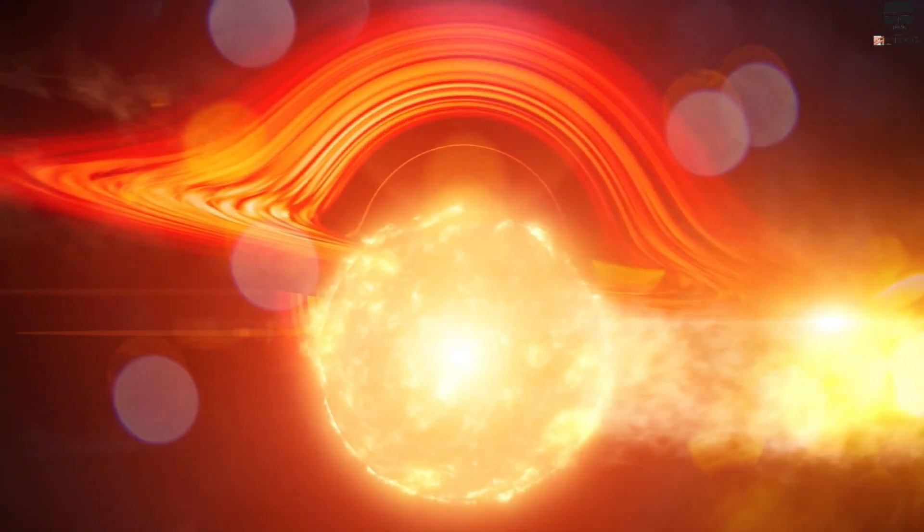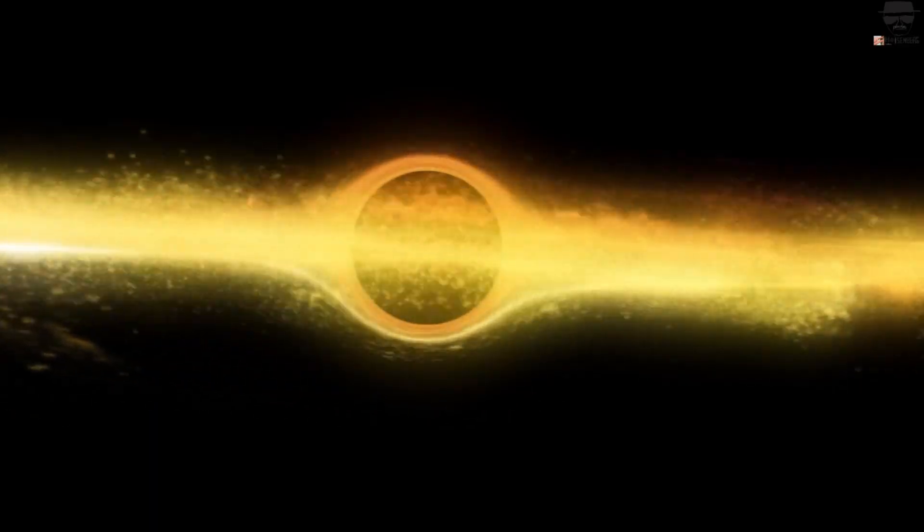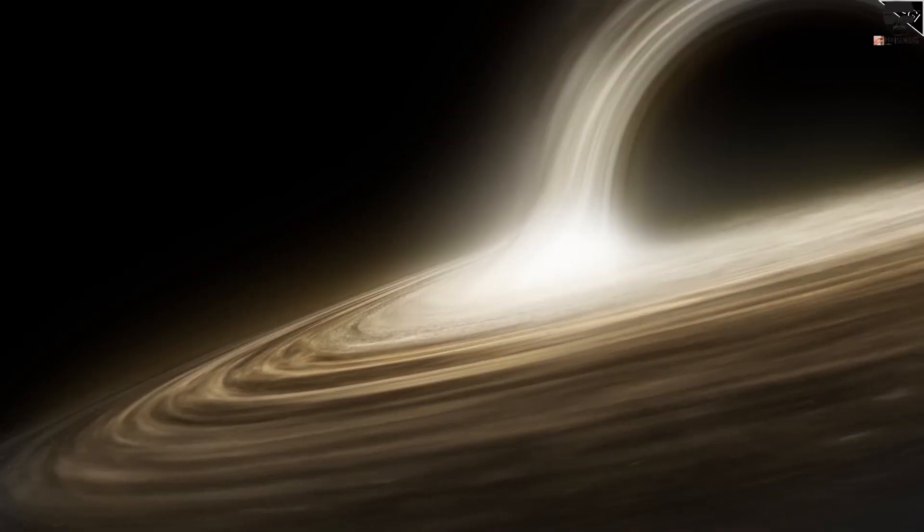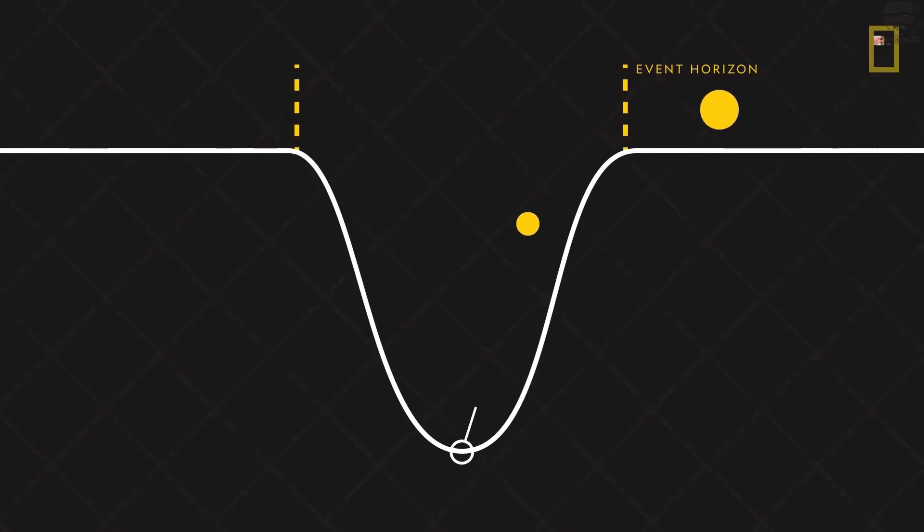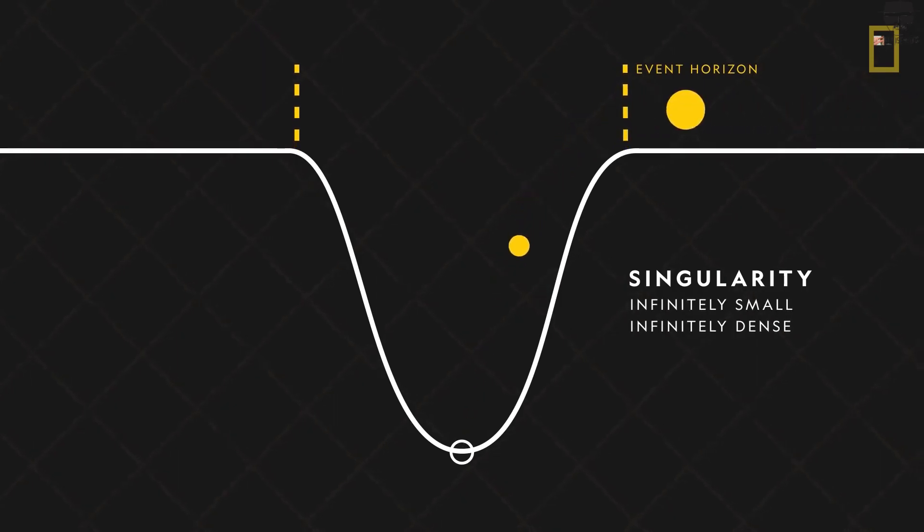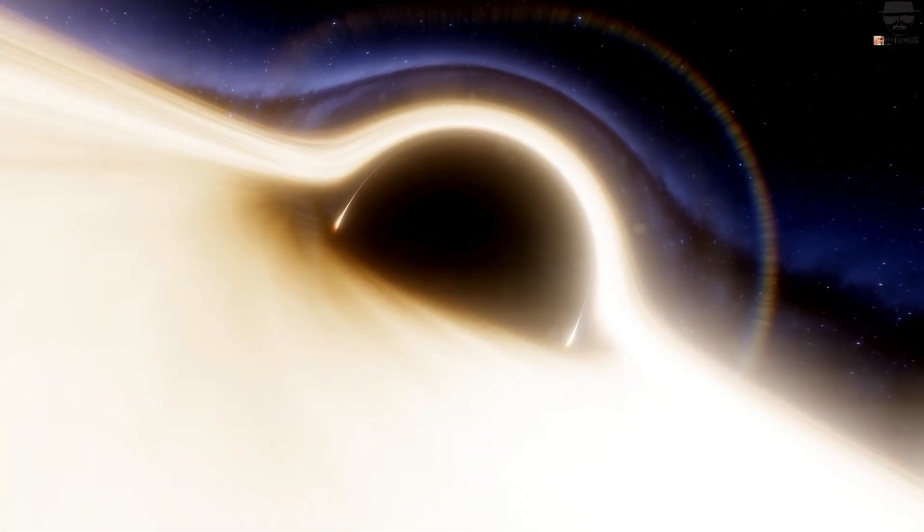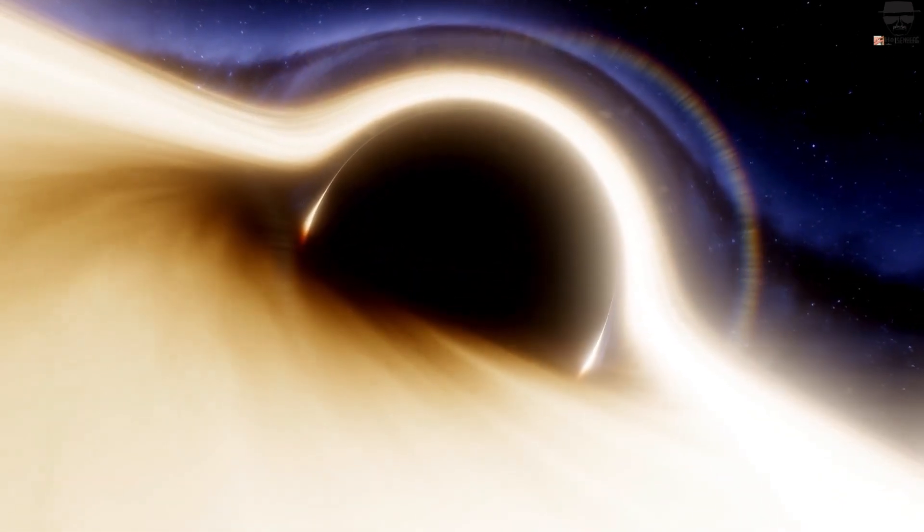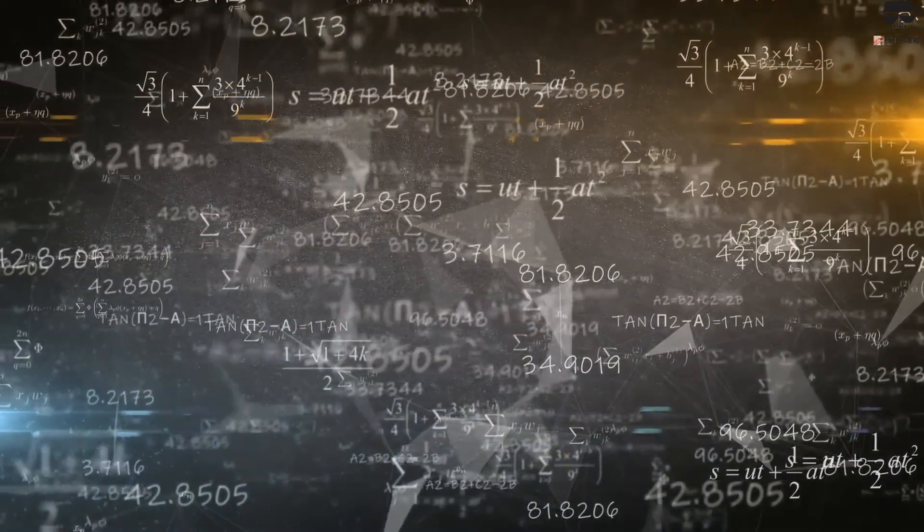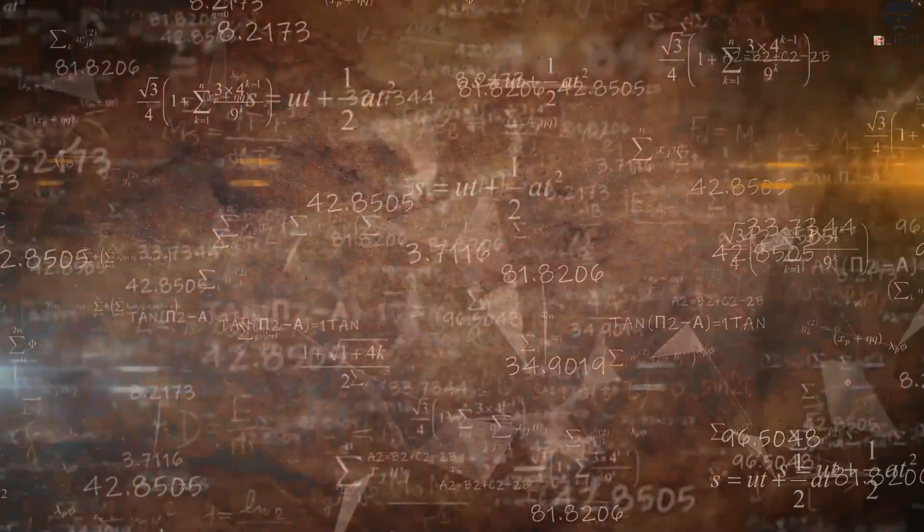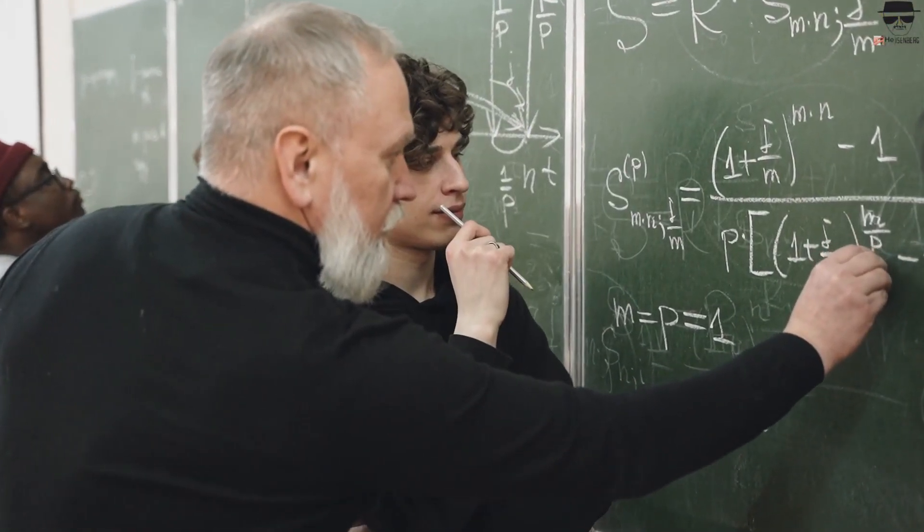People have often wondered whether there might be a stable form of ultradense matter inside that event horizon that will hold up against gravitational collapse, and whether a singularity is truly inevitable. It's a reasonable thing to wonder, as we simply cannot access the region interior to the event horizon. Nevertheless, if you apply the laws of physics as we know them today, you cannot avoid a singularity inside a black hole.